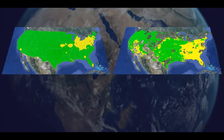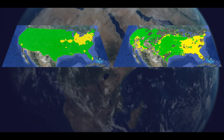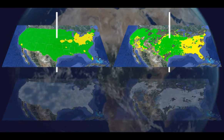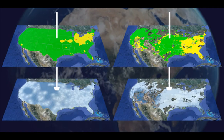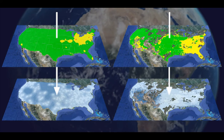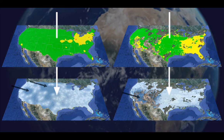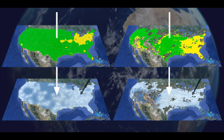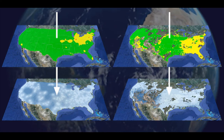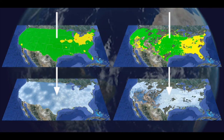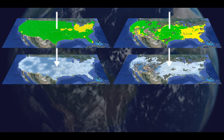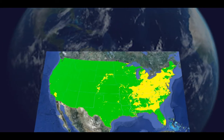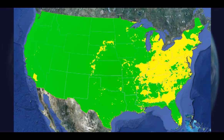At every grid point on the map, a weighted average of satellite estimates and ground observations is calculated based on the relative uncertainty of each data source. More certain data is weighted more heavily. Where the uncertainty is the same, both the satellite and ground observations are weighted equally. This calculation is carried out at every grid point, generating a map of fused PM 2.5 for the entire U.S.